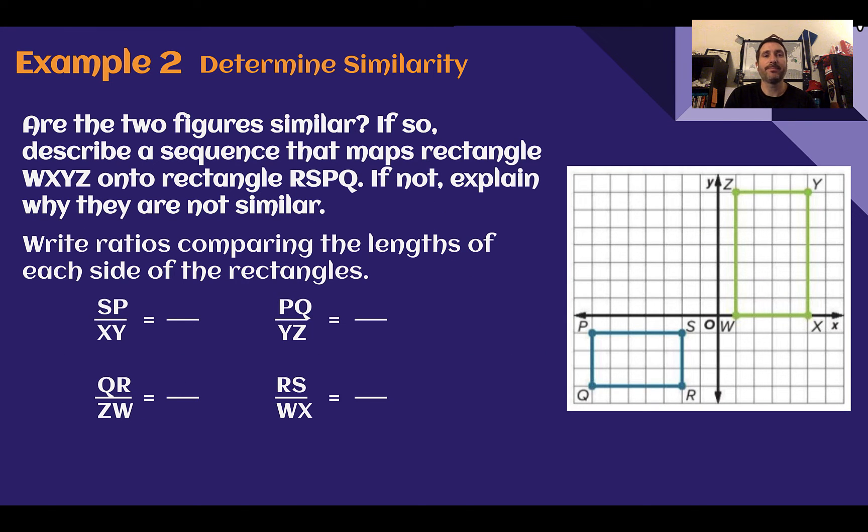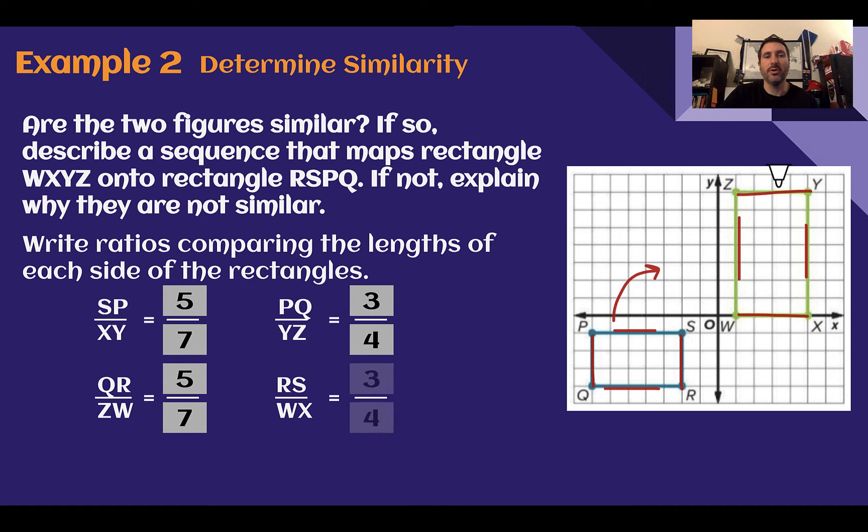Example 2, determine similarity. Are these two figures similar? If so, describe a sequence that maps one rectangle onto the other. If not, explain why they're not similar. For similarity, the first thing we should do is compare our corresponding side lengths to make sure that they do follow the same ratio. This is just rotated up. I can see that my short sides need to compare to my short sides. The short sides are the same, and then my long sides compare with my long sides. Let's do our long side SP is 5 units compared to XY is 7.